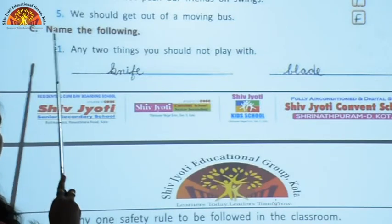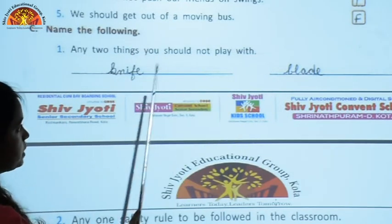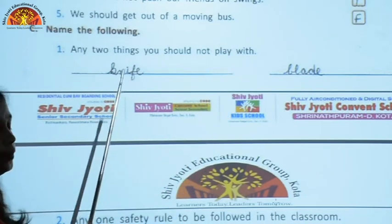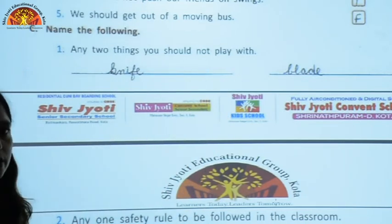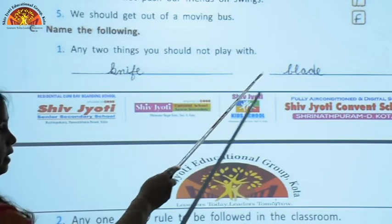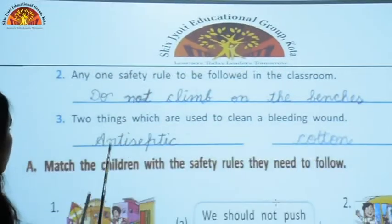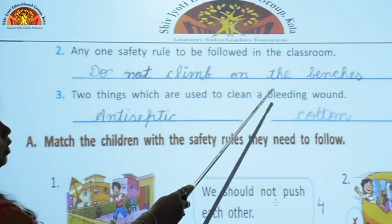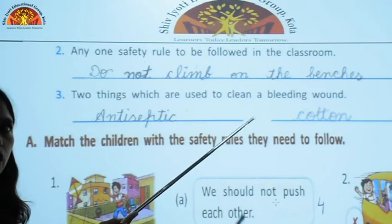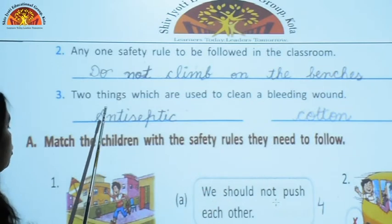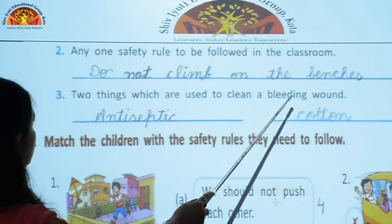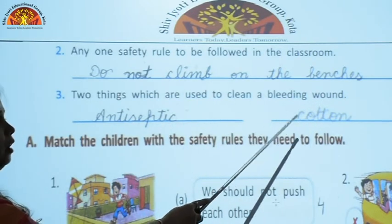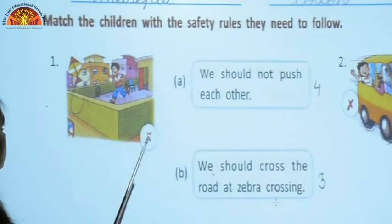Next is name the following. Any two things you should not play with — knife and blade, as they are pointed objects. Any one safety rule to be followed in the classroom — do not climb on the benches, as you may fall down and get hurt. Two things used to clean a bleeding wound — antiseptic and cotton.